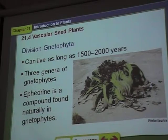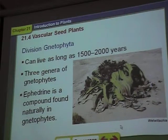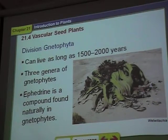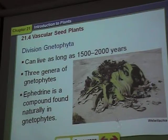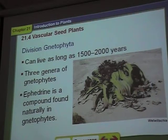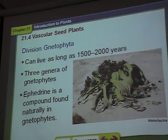These Welwitschia have real long underground stems that go way down into the desert until they reach water — sometimes hundreds of feet. If you ever find a plant like this, you know that there's water way down below it. If you're ever lost in the desert you might start digging — but it could be hundreds of feet deep.